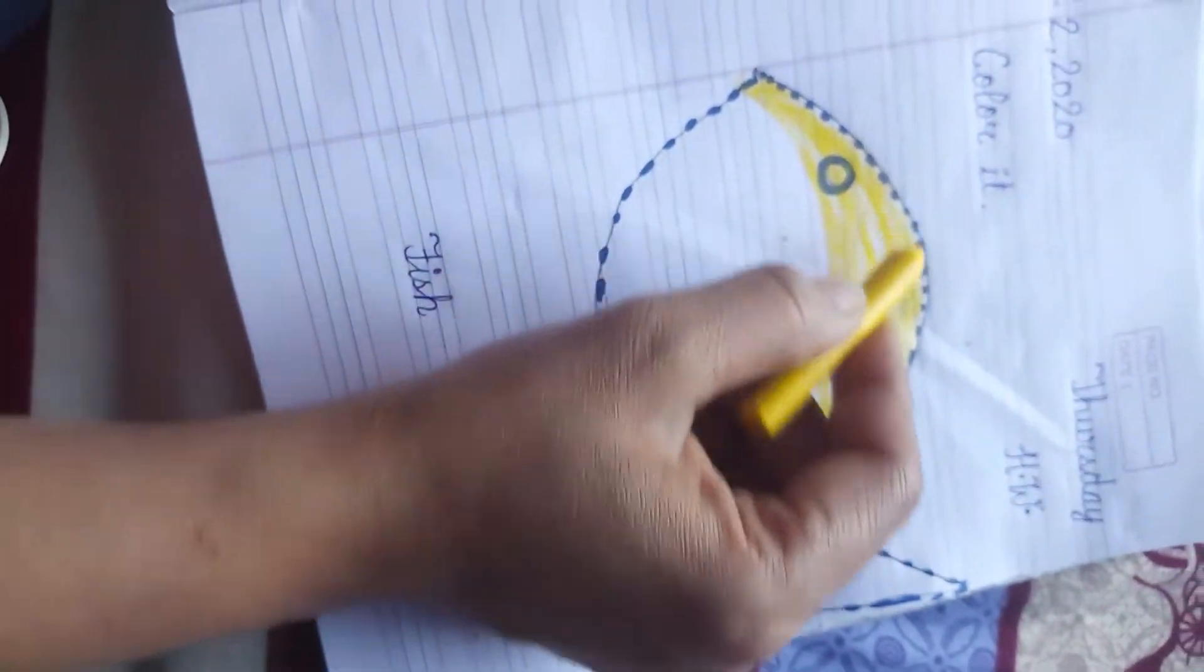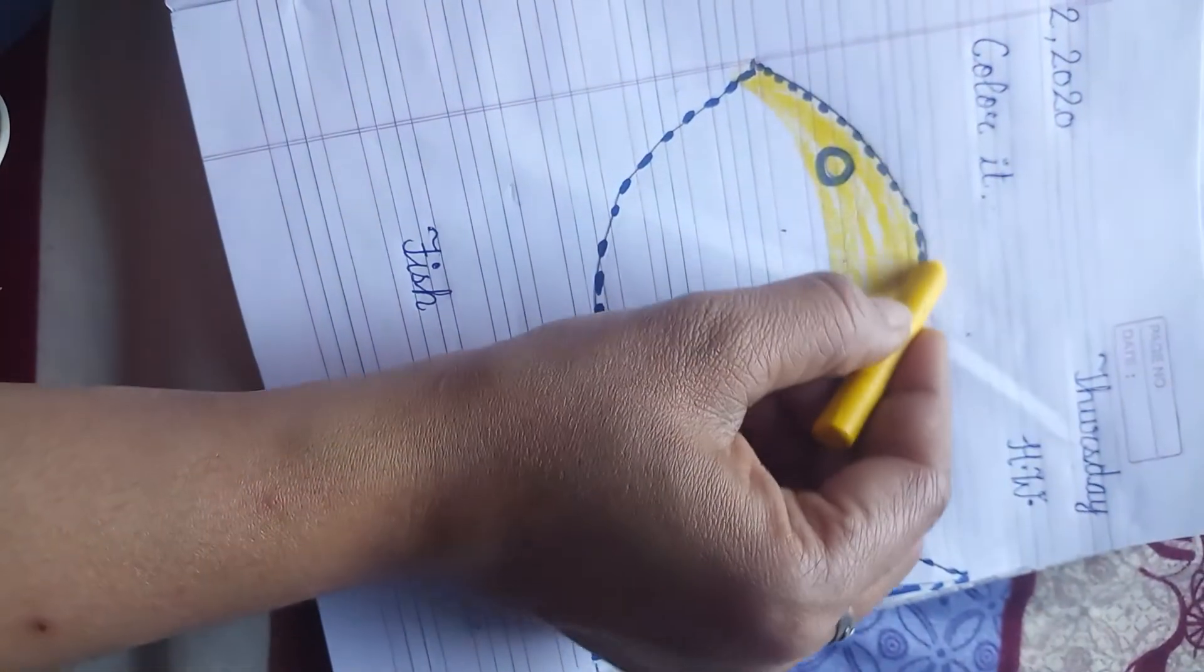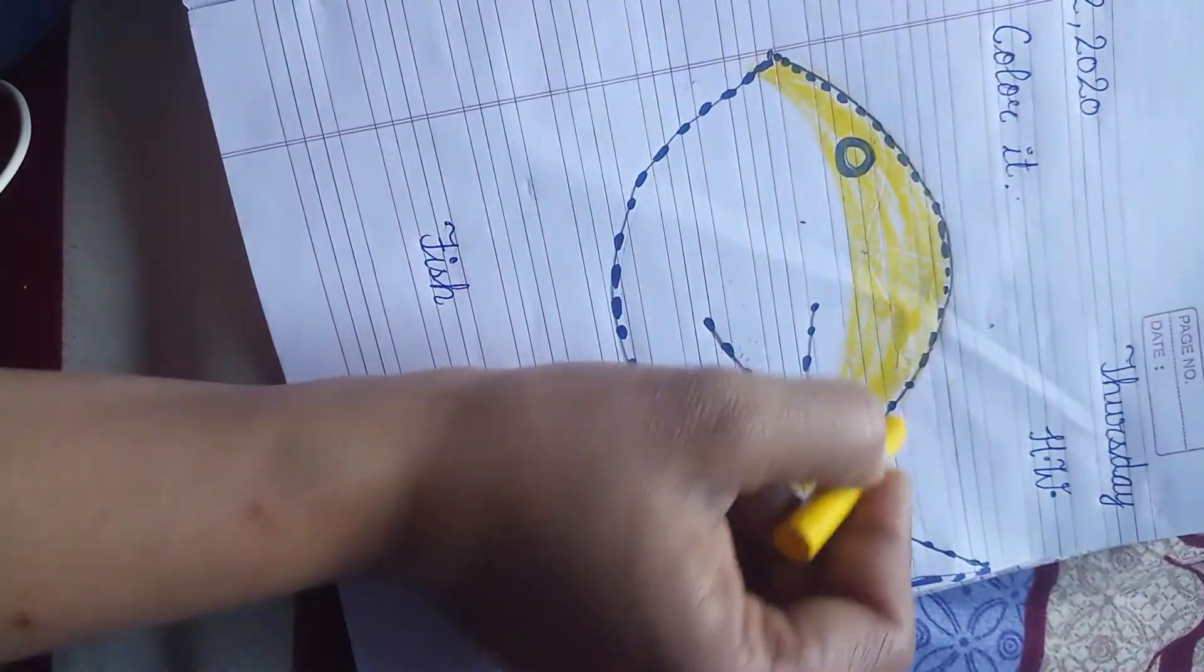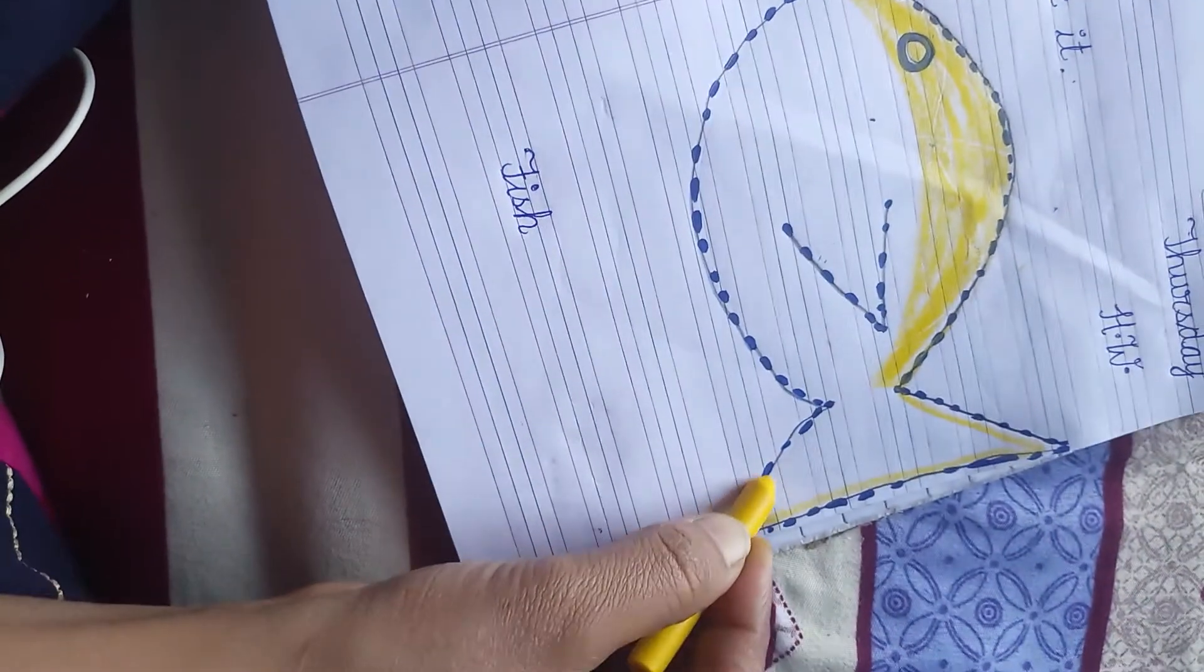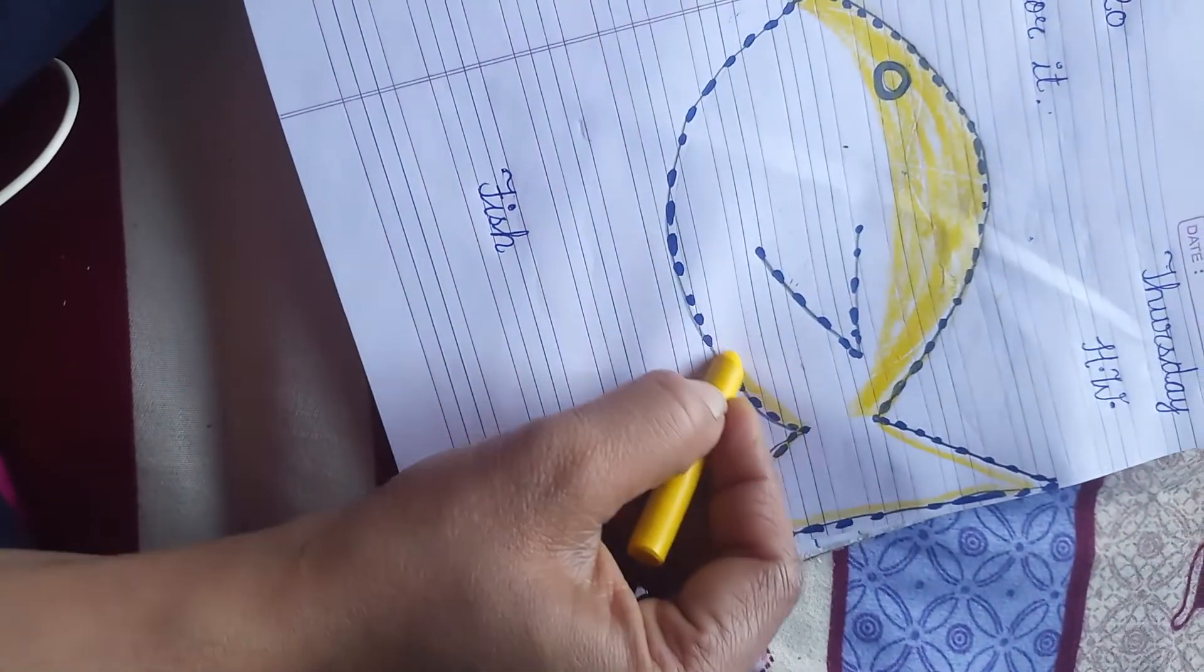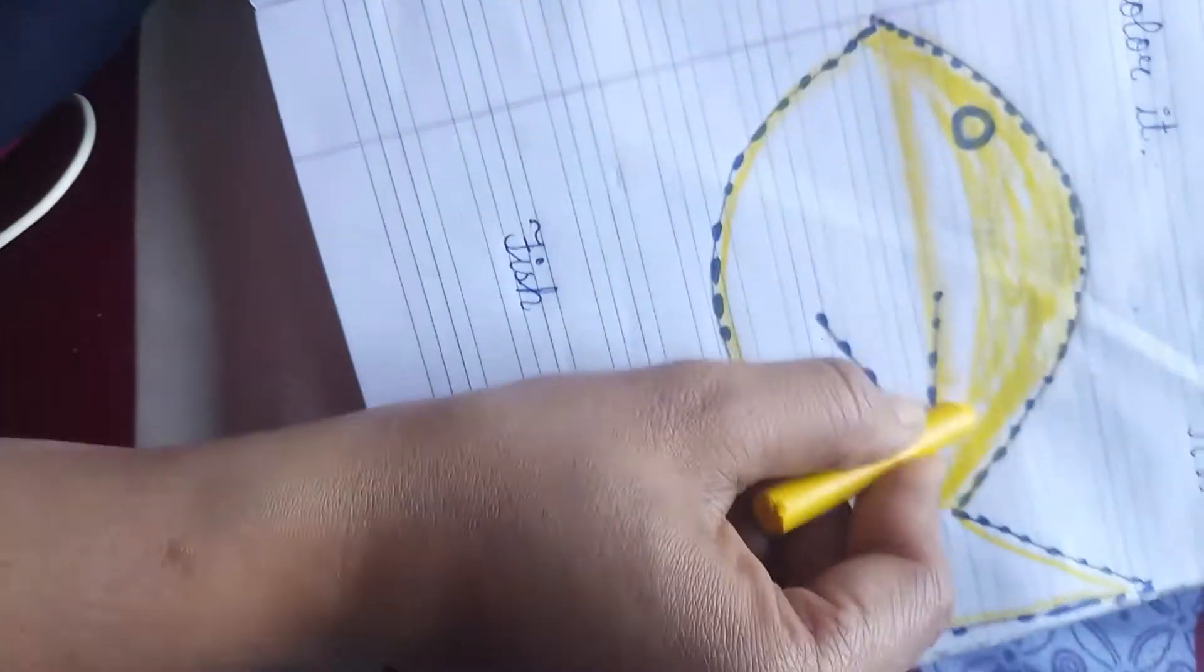Don't put your color outside this line, outside the fish line. This is our fish line. Don't put your color outside it. Now we will color it slightly like this.